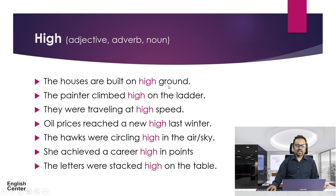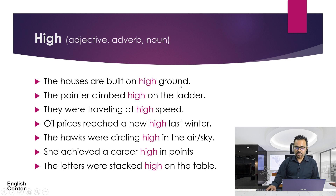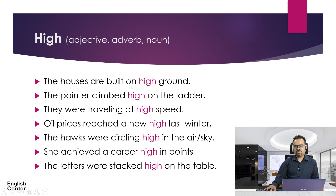Now you can ask how to understand that 'ground' is a noun. Here we have 'on', that is a preposition, and after a preposition we have to have a noun or pronoun. Ground is not a pronoun because the number of pronouns are fixed — he, she, it, they, etc. So definitely this one is a noun. The other words: 'the' is a determiner, 'houses' is a noun, 'are' is an auxiliary verb, 'built' is a verb, 'on' is a preposition, 'high' is an adjective, and 'ground' is a noun.